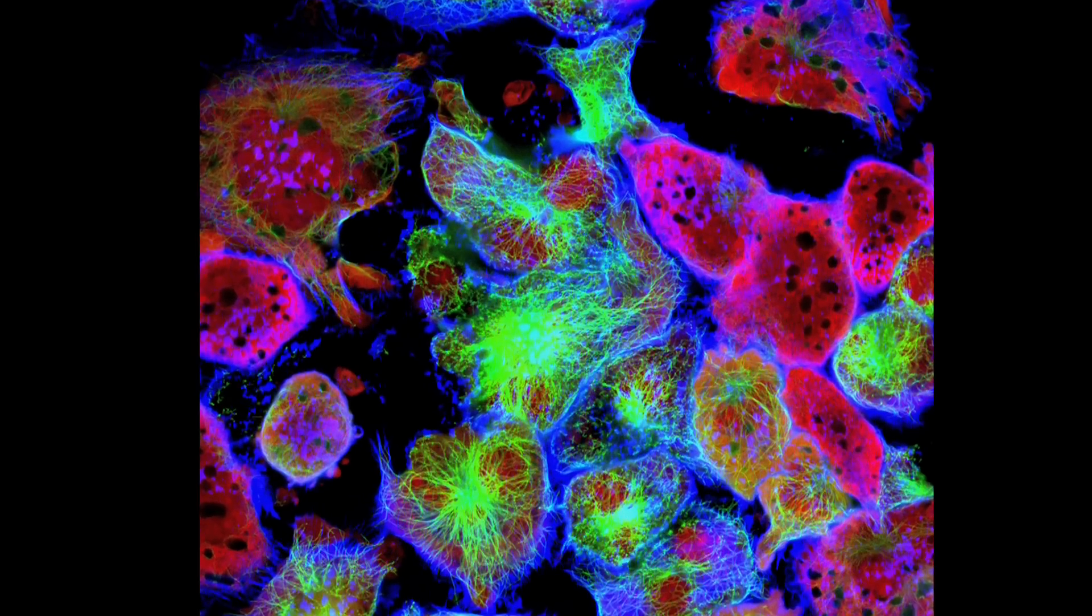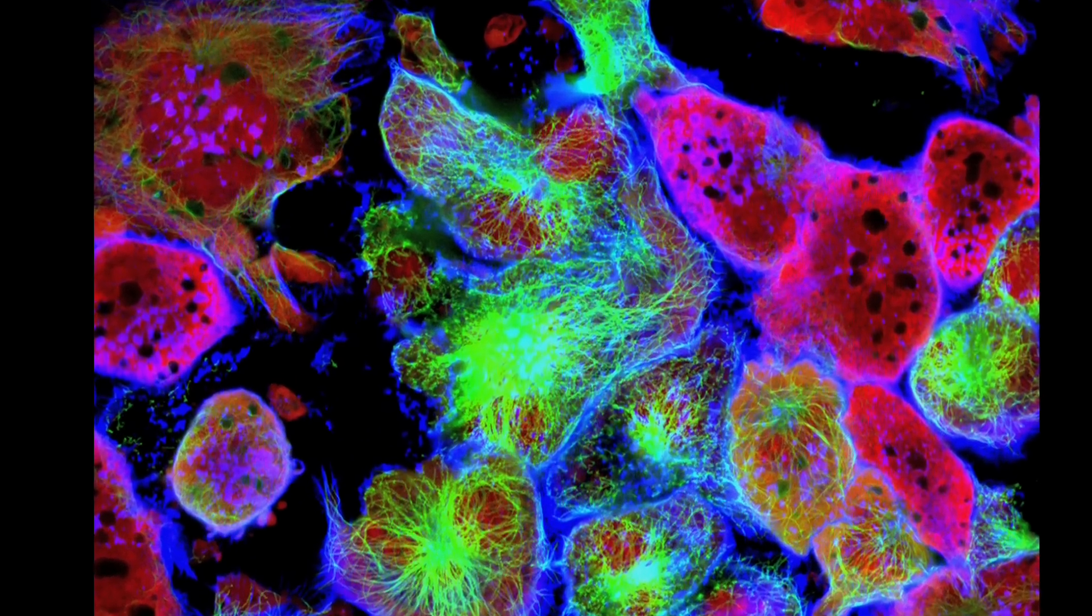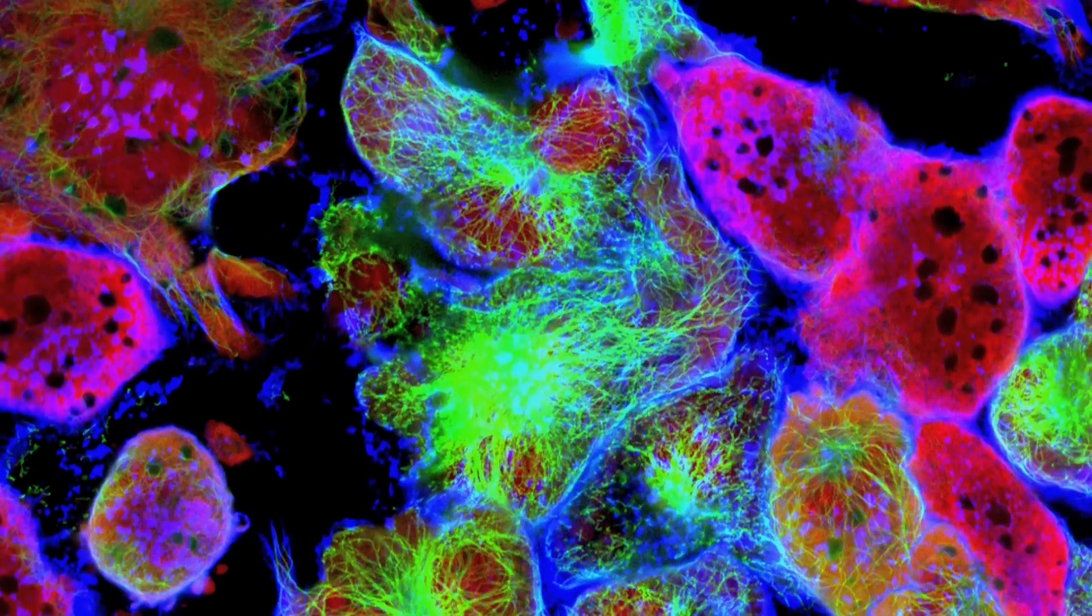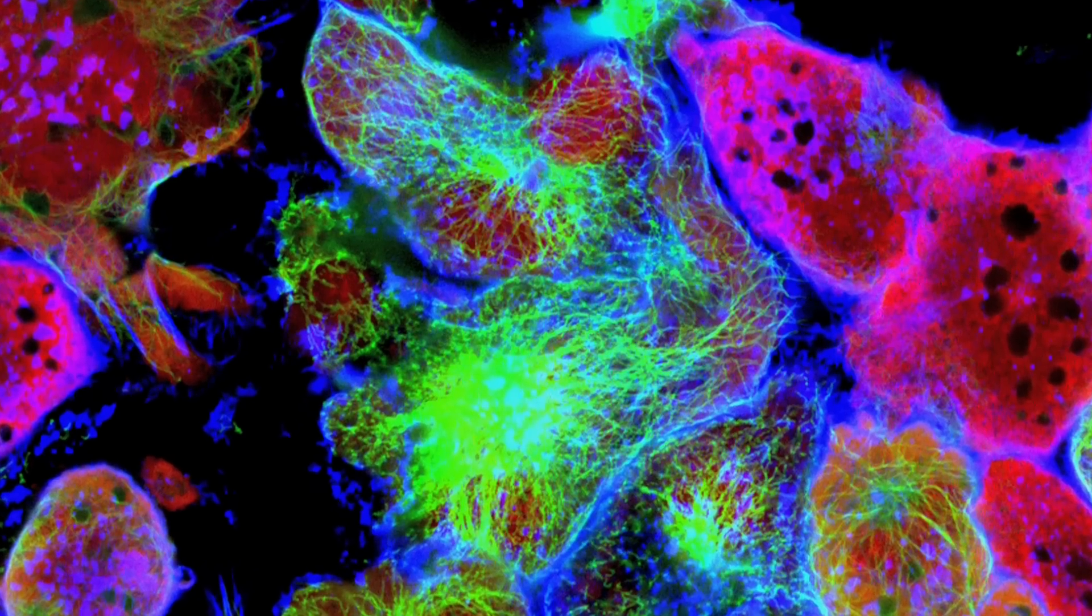Many cancer lines will have mutations in the pathway that we study, which is called mRNA splicing. So if we understand fundamentally how this pathway works, then we could better understand what is going on in a cancer cell.